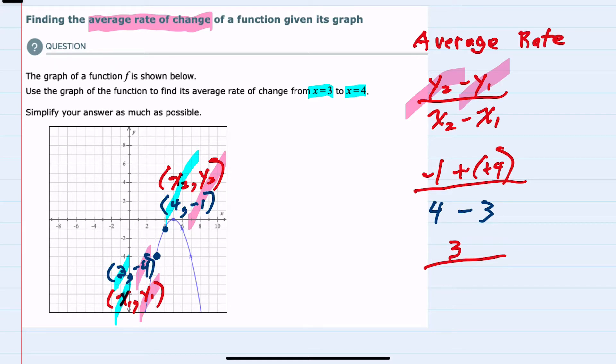Our denominator simplifies to just 1, so the average rate of change is 3 over 1, or just 3.